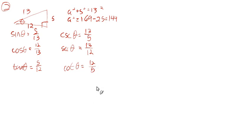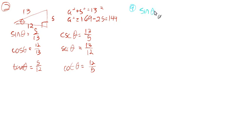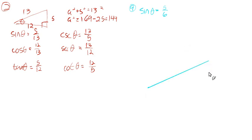Now we'll do number 9. They want us to sketch a right triangle that corresponds with this: that the sine of some angle is equal to 5 over 6. And basically use a triangle to find all of the trig values — sine, cosine, and so on.